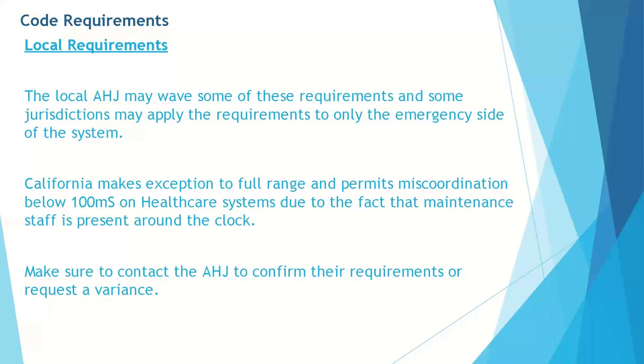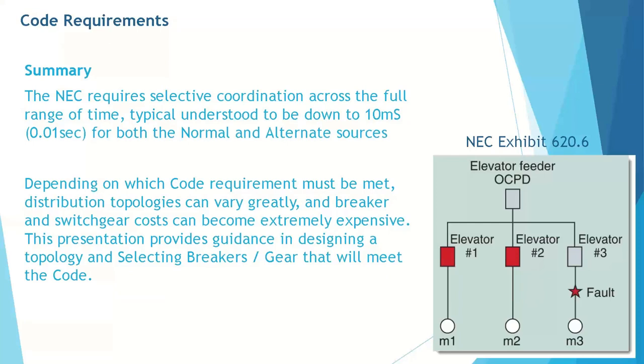Sprinkled in related sections are ground fault protection selectivity requirements, but we will focus this discussion on phase protection. For COPS systems in 708.54, again states all supply side devices. For elevator systems, we have section 620.62 that phrases it slightly different with any other supply side devices. Any other is understood to be the pathway all the way back to the source. I want to point out that as with series rating of elevator systems, there is no exception in this section for devices in series as we saw previously with emergency or legally required.